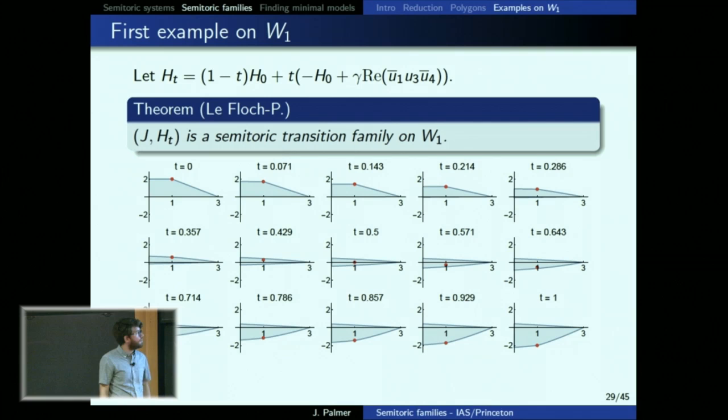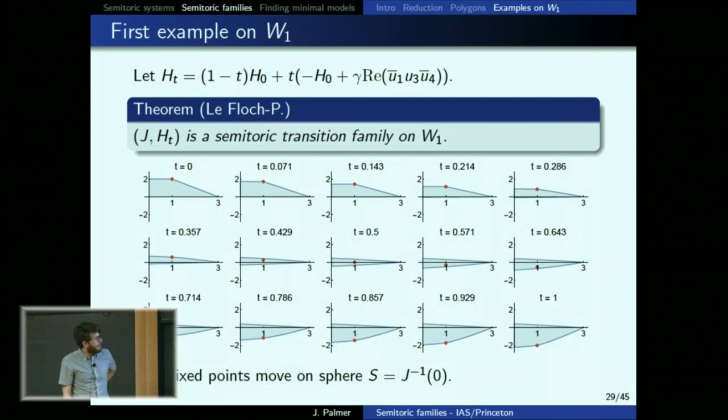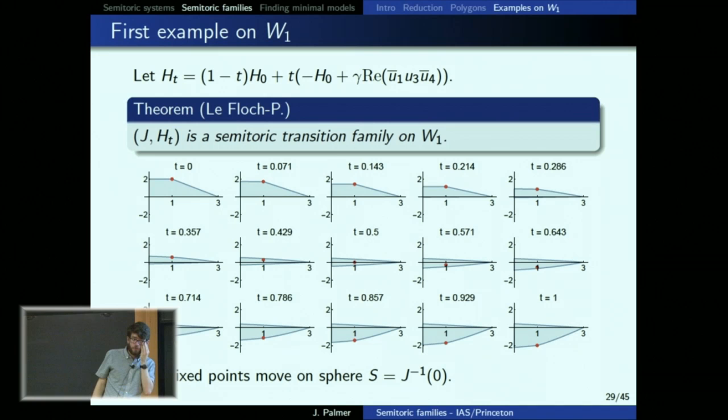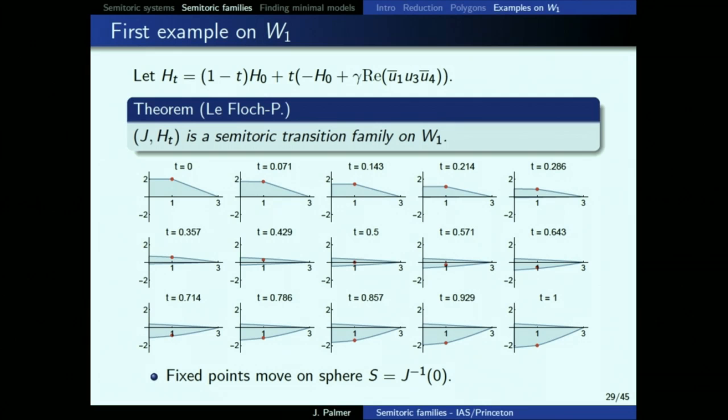A thing to notice about this system is that the vertical wall on the left side corresponds to a fixed sphere of the J action — I use the terminology 'vertical wall' and 'fixed sphere' interchangeably. If you have a vertical wall, the fiber above it is a sphere that the S^1 action doesn't move. The fixed points — essentially the top and bottom of that sphere — are rank-zero points of the integrable system and, since they're on the fixed sphere, can move around it.